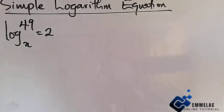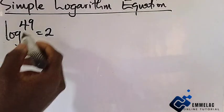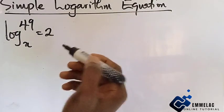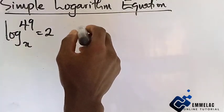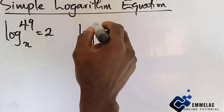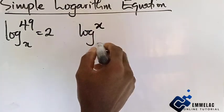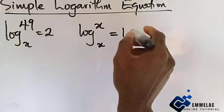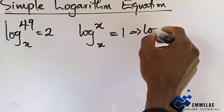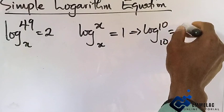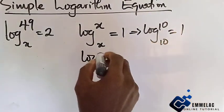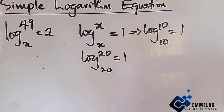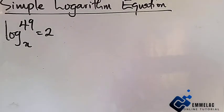But before we move further, you must understand that this is the integral and this is the base. A law in logarithm tells us that when the integral of a log and the base is the same, this will give us 1. Which also implies that log 10 base 10 will give us 1, so log 20 base 20 will give us 1.